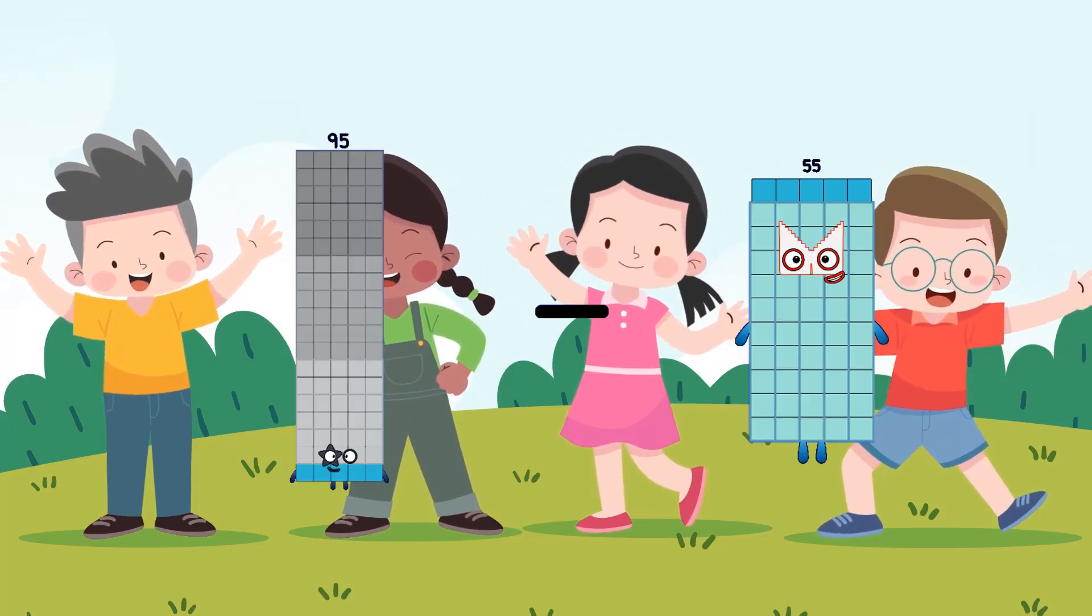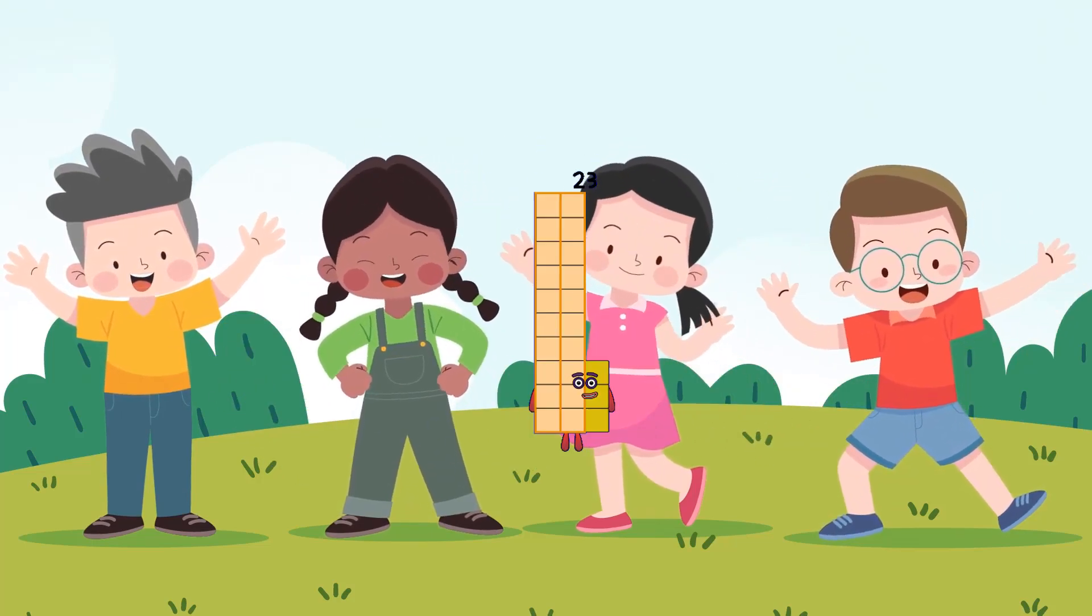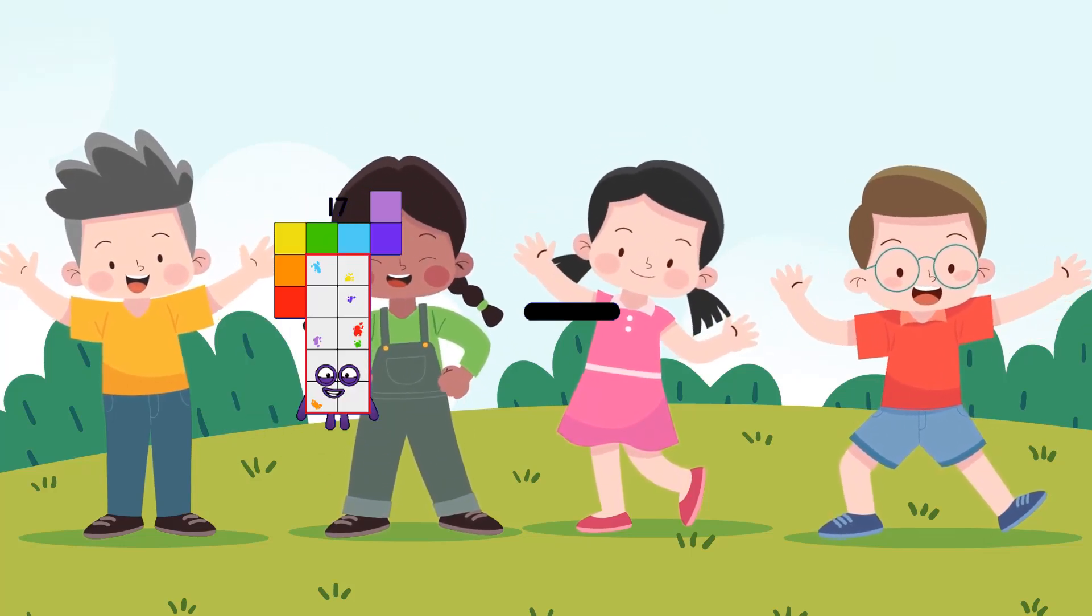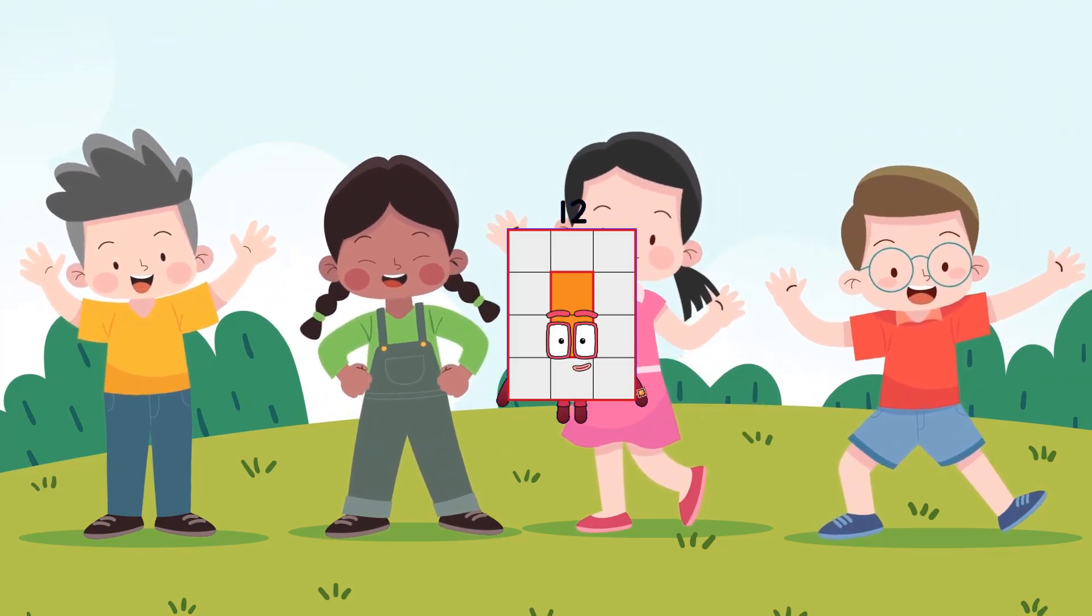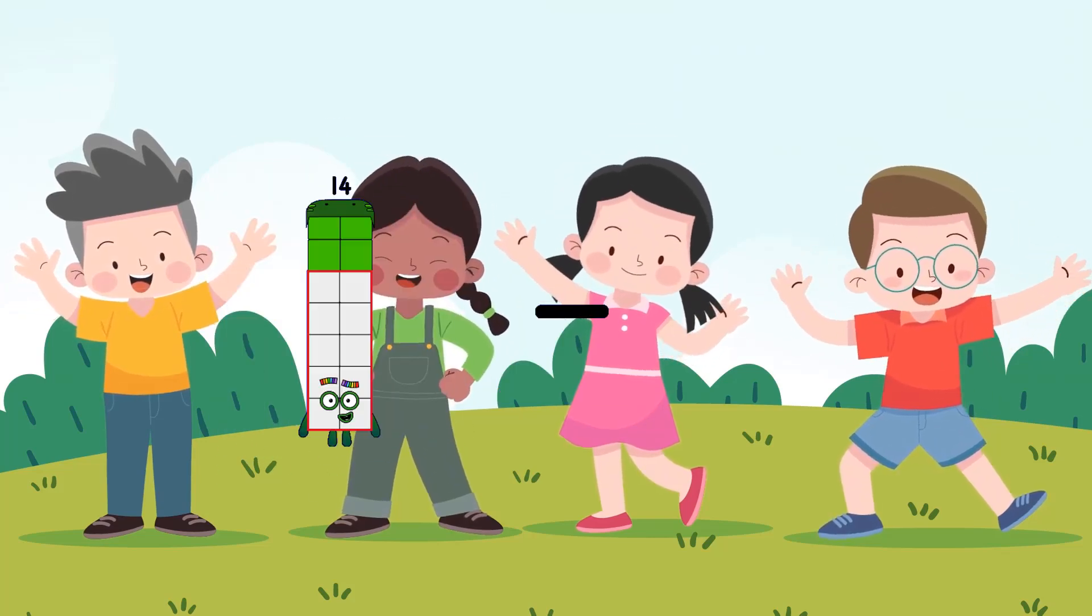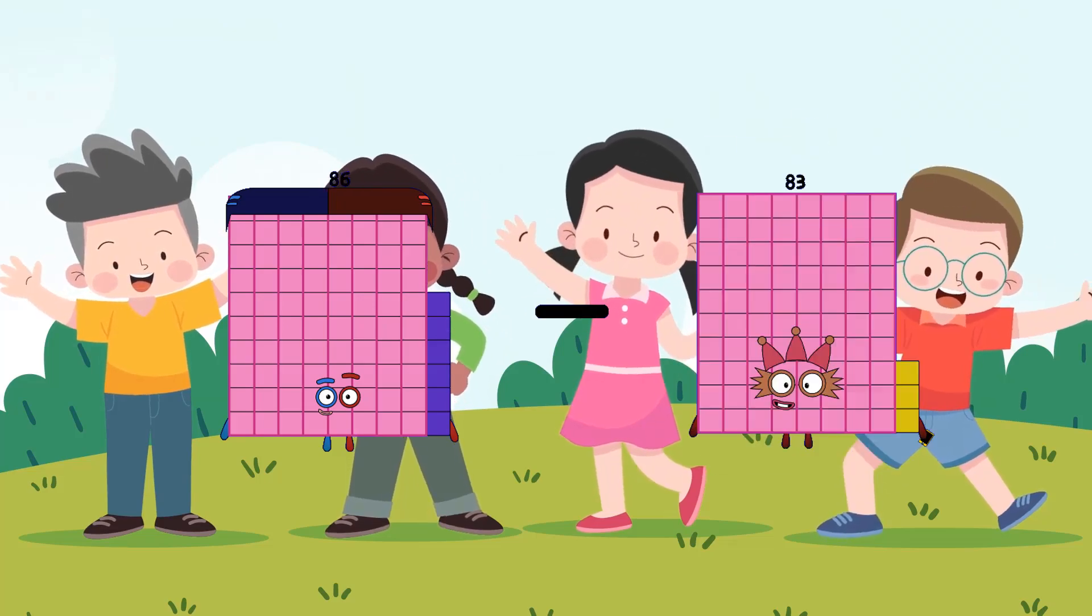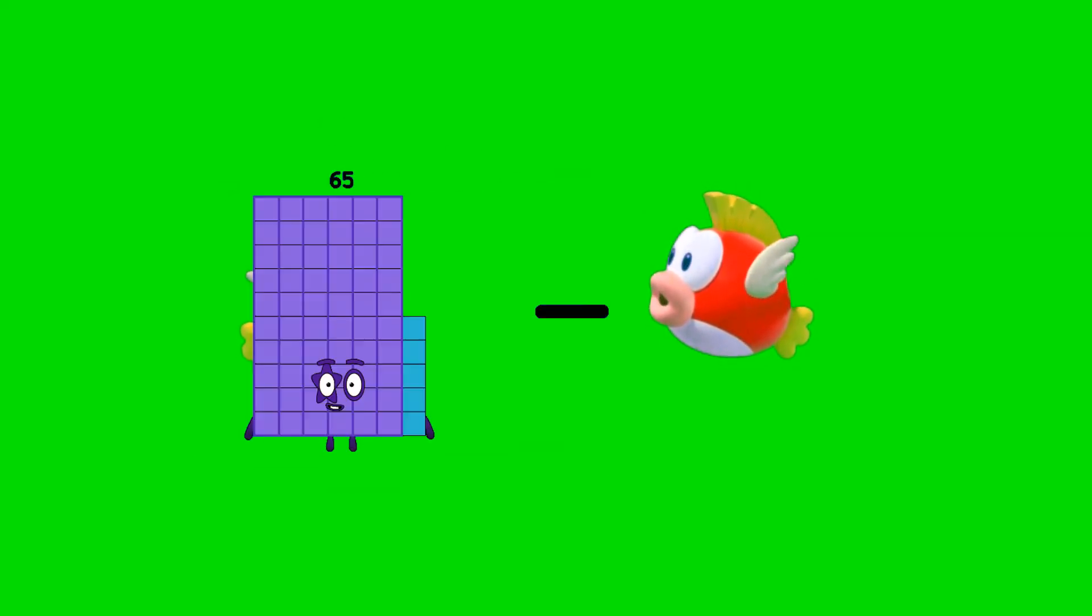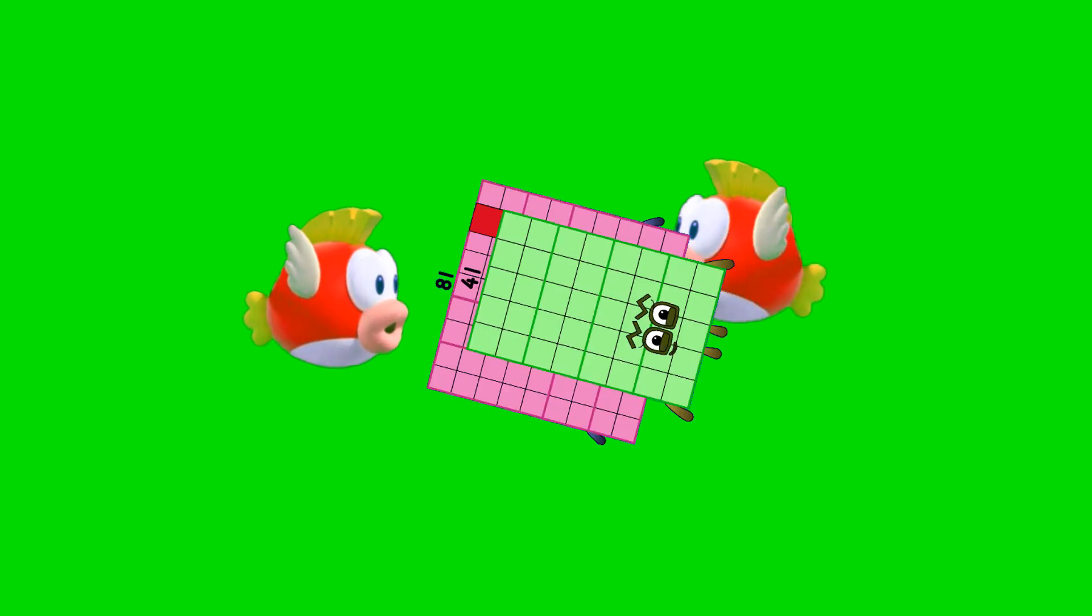95 minus 72 equals 23. 72 minus 5 equals 12. 86 minus 33 equals 53. 81 minus 41 equals 40.